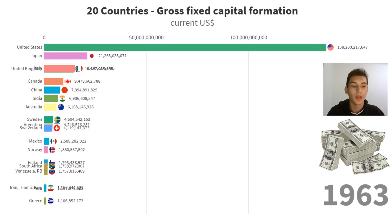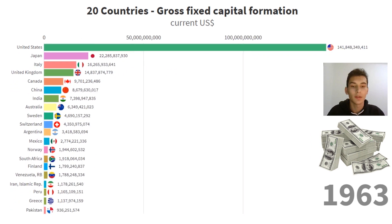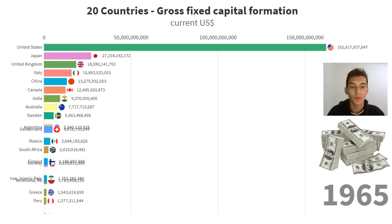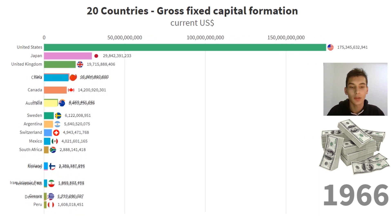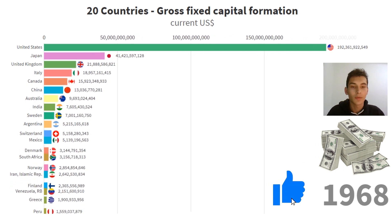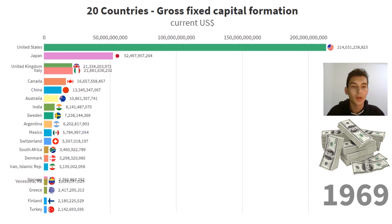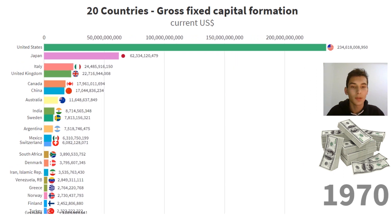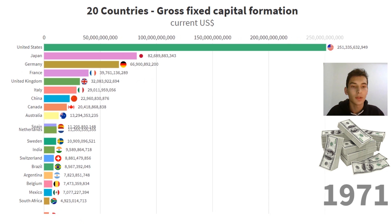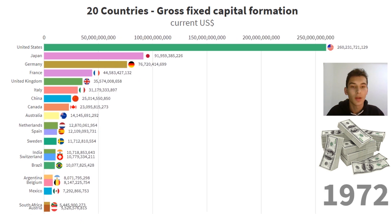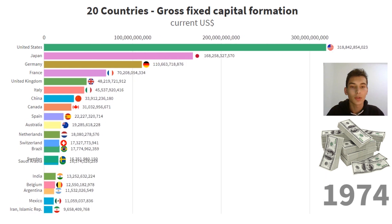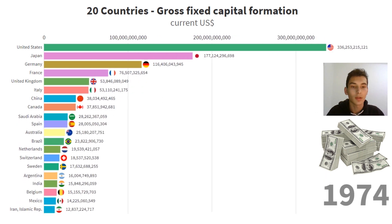Hello, welcome back to a new data video. In this video we are going to see the gross fixed capital formation from the years 1960 to 2018. Gross fixed capital formation, formerly gross domestic fixed investments, includes land improvements, fences, ditches, drains, and so on, plant machinery and equipment purchases, and the construction of roads, railways, and the like.